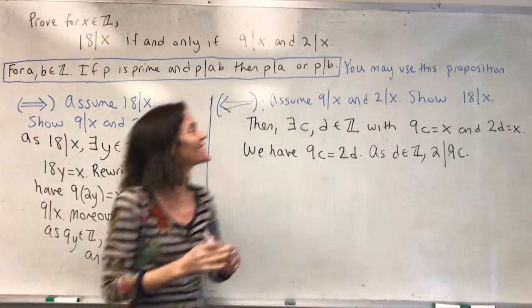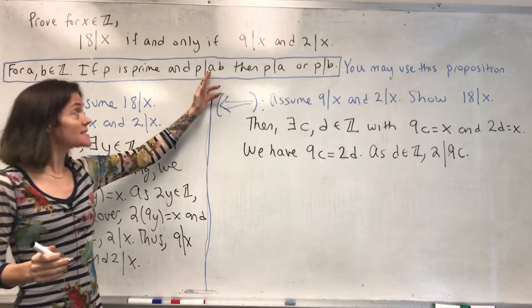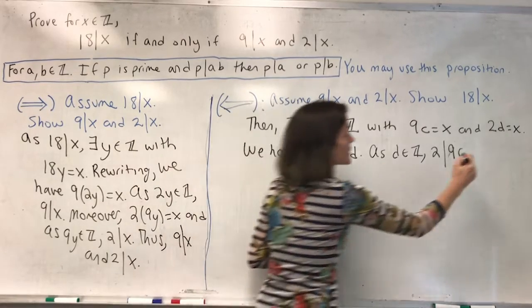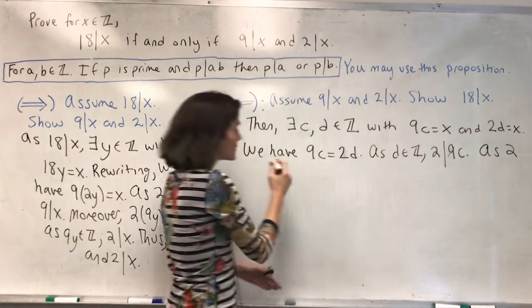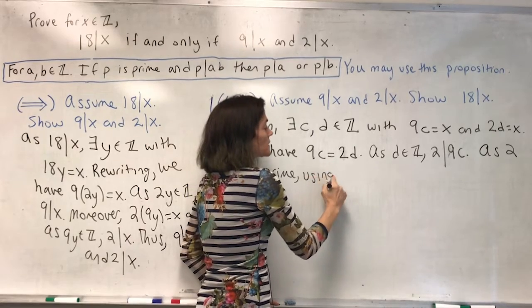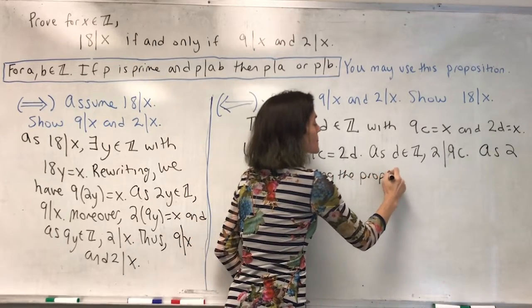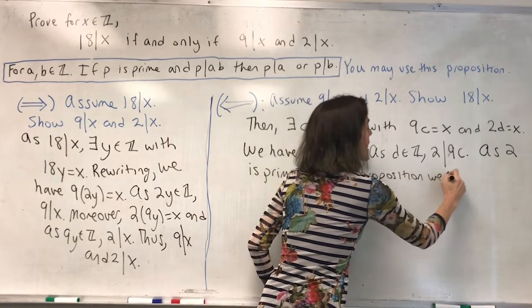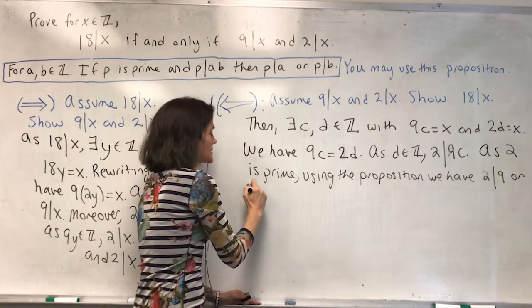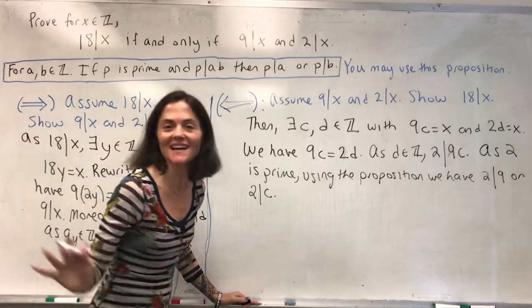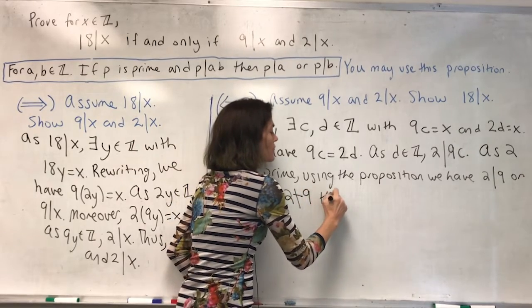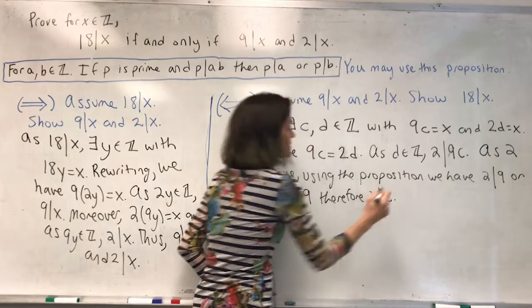We see here, if p is prime and p divides a product, then p divides one of the two. Here, 2 is prime. Using the proposition, we have that 2 divides 9 or 2 divides c. However, 2 does not divide 9, we know this. 2 does not divide 9, therefore 2 divides c.